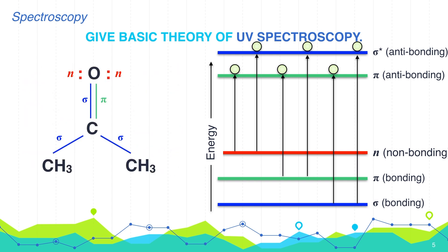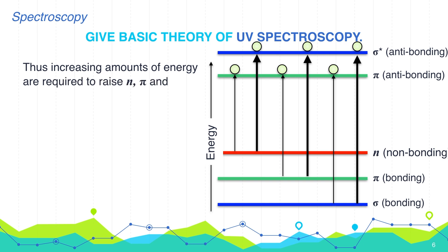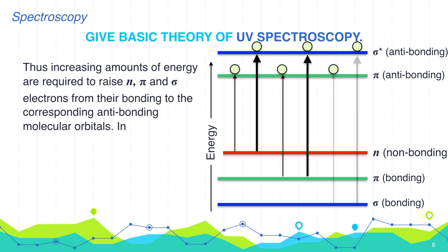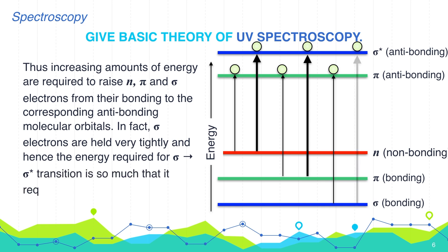The π→π* transition occurs with compounds containing a double bond, and the n→π* transition occurs with compounds containing a heteroatom like oxygen or nitrogen. Increasing amounts of energy are required to raise n, π, and σ electrons from their bonding to their corresponding anti-bonding molecular orbitals.